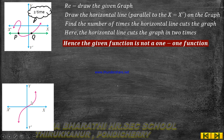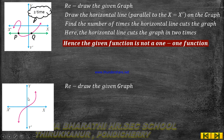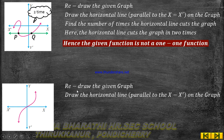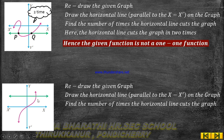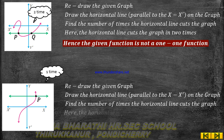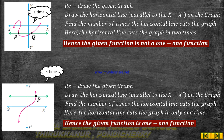Next is the third graph. The xy plane shows the pink graph. Now we draw the horizontal line parallel to the x-axis on the graph. The green horizontal line cuts the graph at only one point, hence the given function is a one-to-one function. That's all.